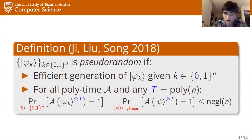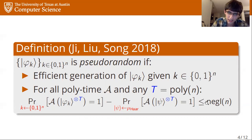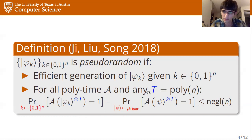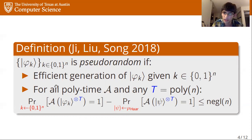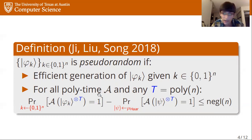It's important to emphasize that pseudorandom states are different from t-designs. The key differences are: in t-designs you fix t in advance, whereas here t can be any polynomial; and second, this is fundamentally a cryptographic notion, so we're only considering computationally bounded adversaries. By contrast, t-designs are defined such that they have to work for any adversary — essentially any possible quantum measurement you can perform.